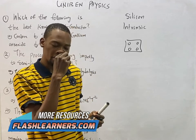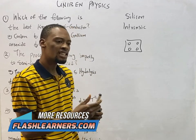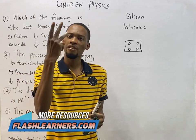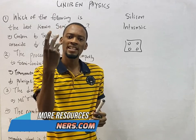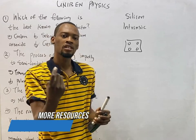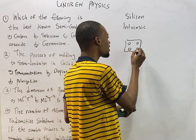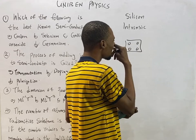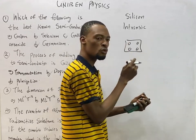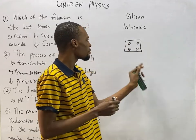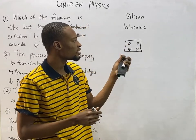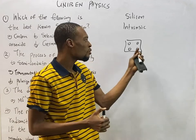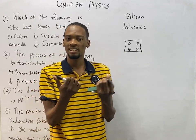If you add a trivalent impurity — elements that have three electrons in the outer shell — one electron pairs here, one here, and one here, leaving you with one hole. This type of semiconductor is called a p-type semiconductor, because there are more holes than electrons.